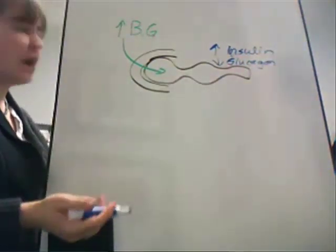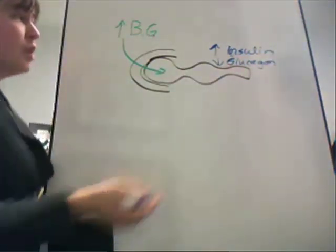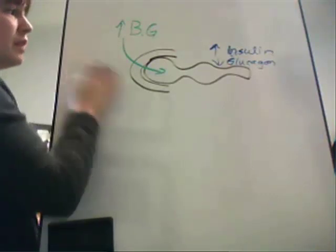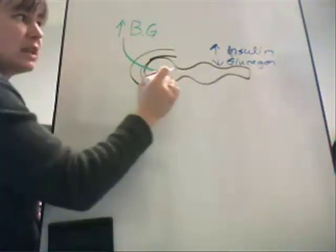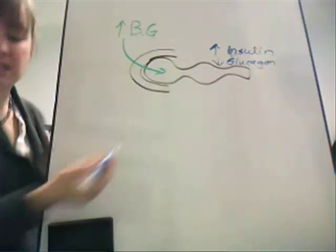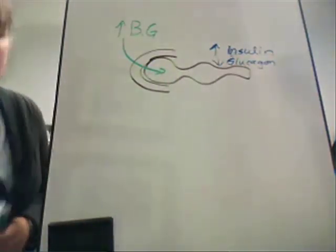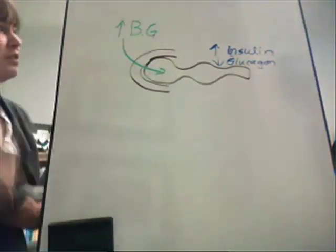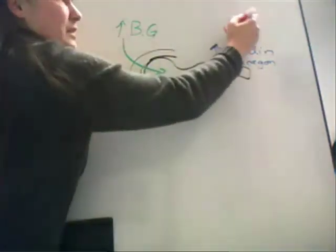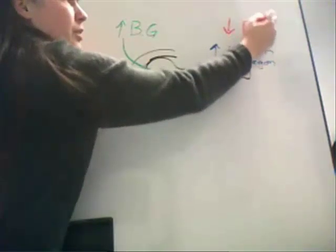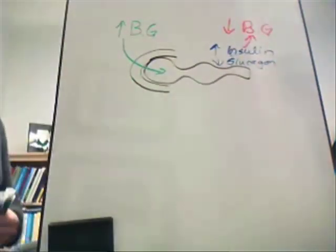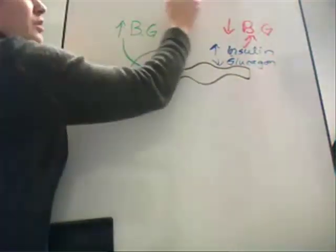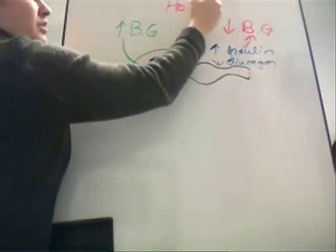The pancreas will also decrease the synthesis of glucagon because they have opposing effects. Glucagon is produced by the alpha cells. So when blood glucose levels are elevated, the pancreas responds by increasing insulin and decreasing glucagon, which will decrease blood glucose levels and bring us back to homeostasis.